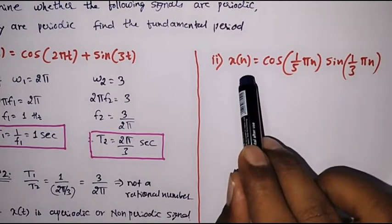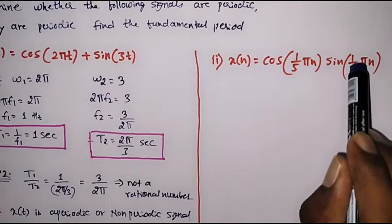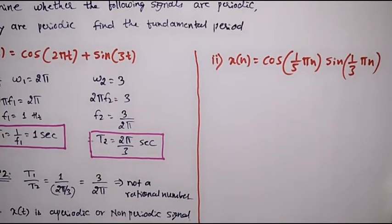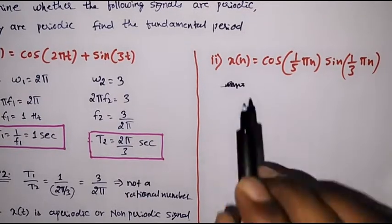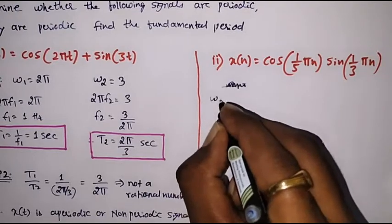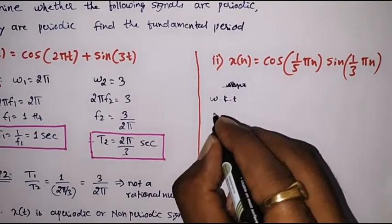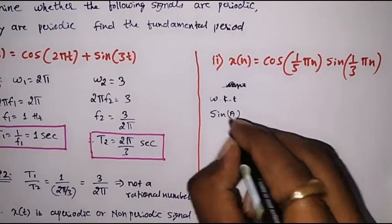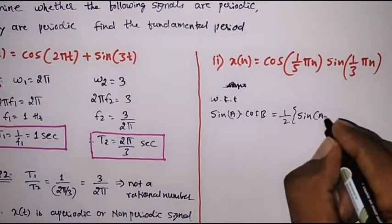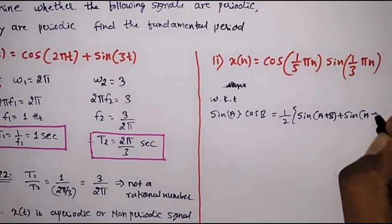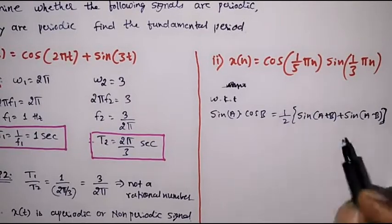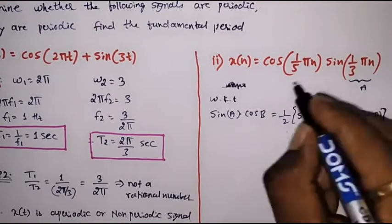Let us take another example. x(n) is equal to cos(π/5 · n) · sin(π/3 · n). Here x(n) is a discrete signal. We are supposed to verify whether it is periodic. We can observe that x(n) is a product of two signals. We will convert this product into a sum using the identity: sin(a)cos(b) equals (1/2)[sin(a+b) plus sin(a−b)]. We will express x(n) in this form, assuming a equals π/3 · n and b equals π/5 · n.